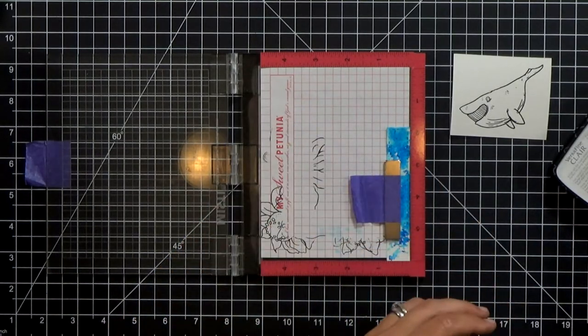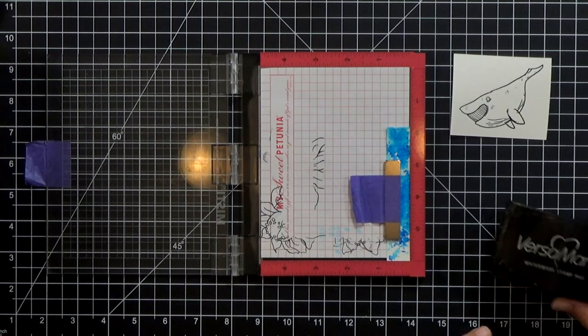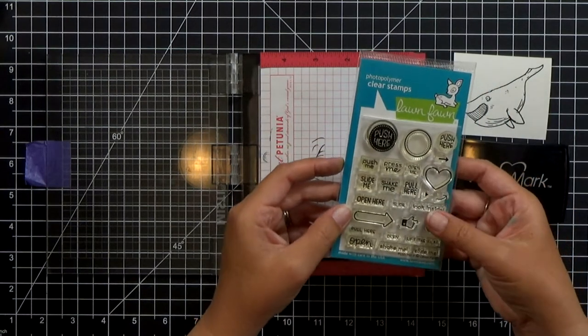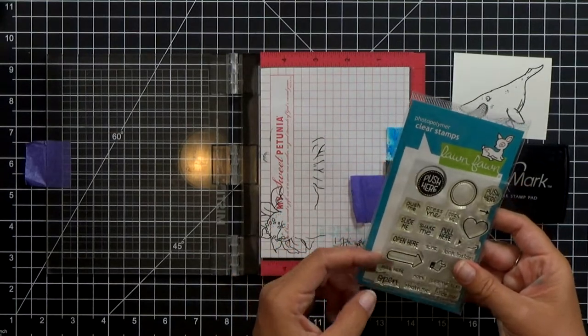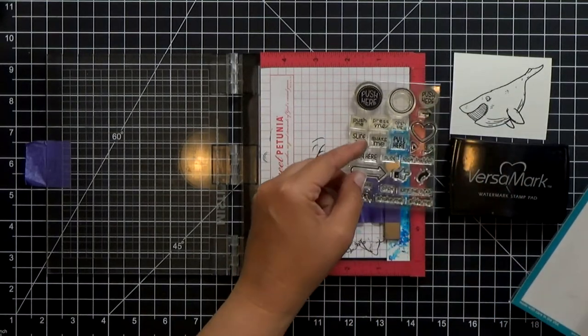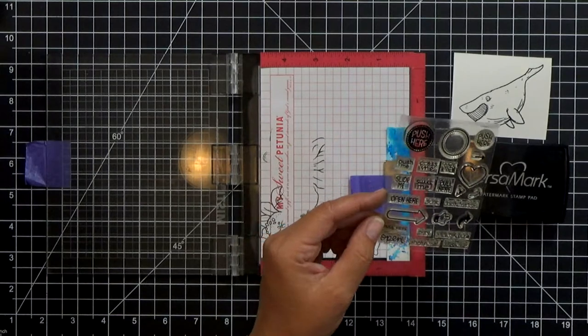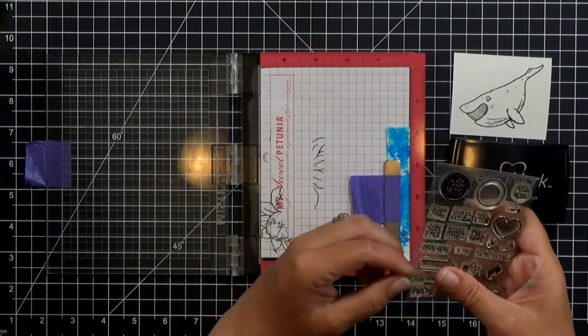Now that tab I had cut out with a stitched rectangle die so at the top I'm going to just emboss the word pull and I'm just picking one of the little stamps from this Lawn Fawn set here.